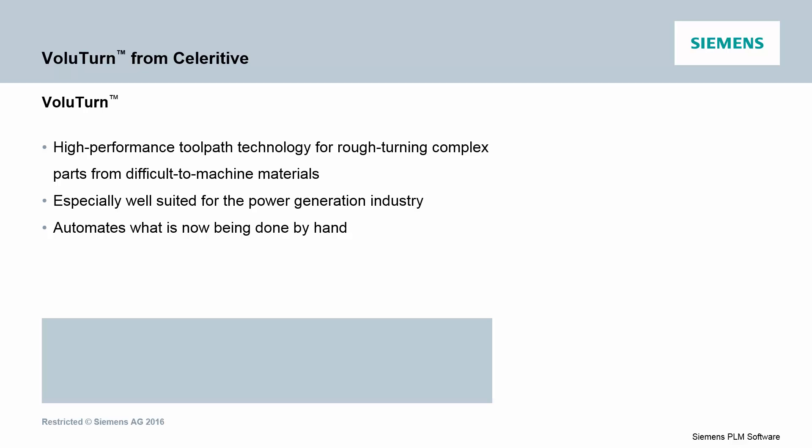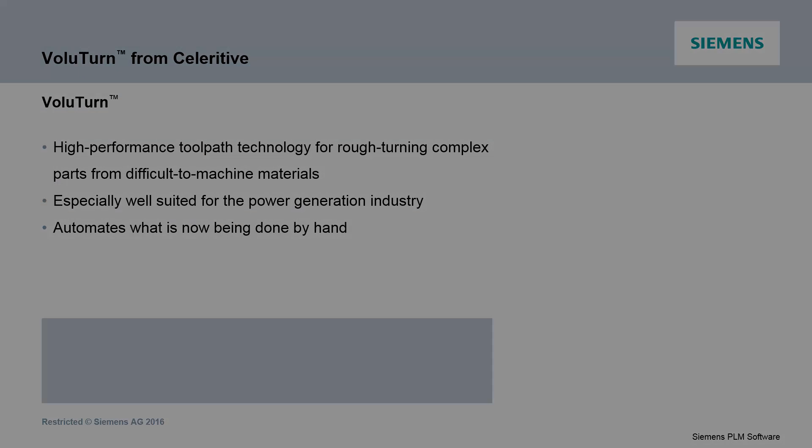Volu-Turn is a roughing technology designed specifically to address challenges in the power generation industry. Typically, these parts are high-temperature alloys and are machined using full radius inserts. Often ceramic, these inserts are prone to notching.